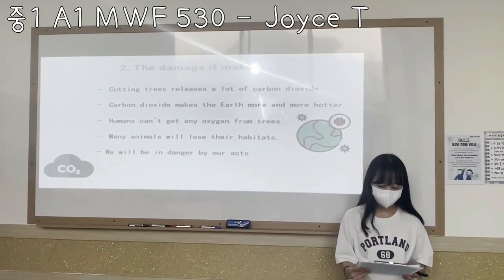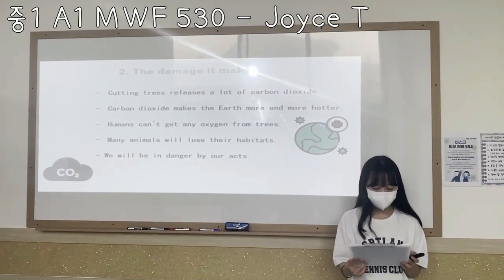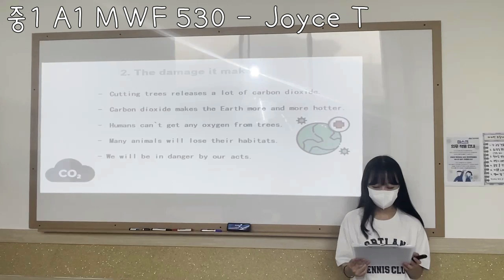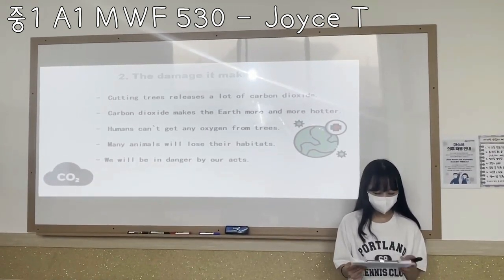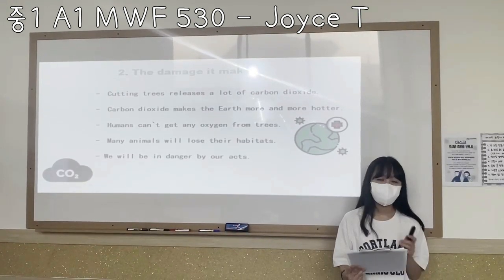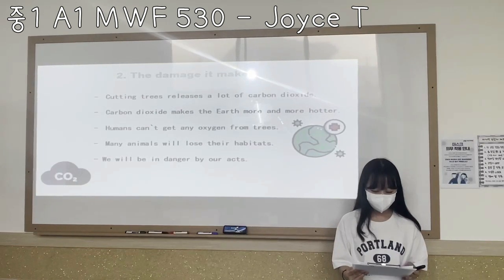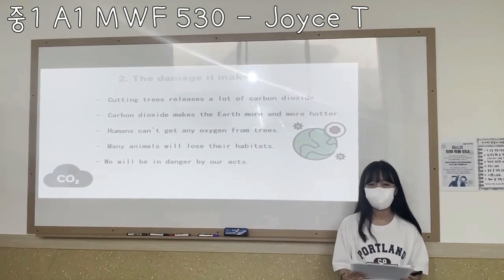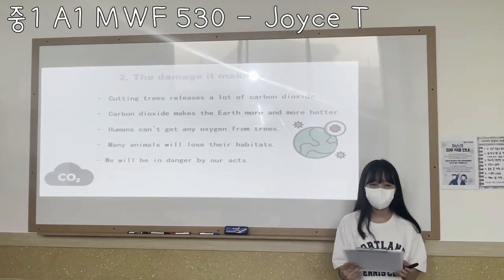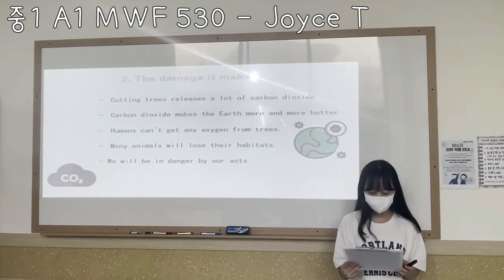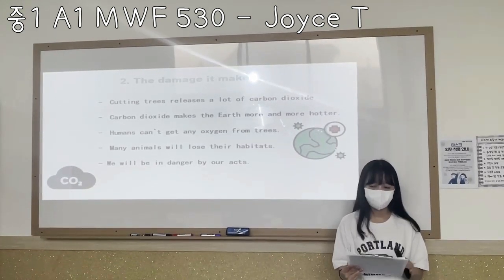Second, I will explain the damage it causes. Cutting trees releases a lot of carbon dioxide into the atmosphere. Carbon dioxide makes the Earth hotter and hotter, and humans cannot get oxygen from trees. In addition, many animals will lose their habitat. Eventually, we will be in danger because of our own acts.